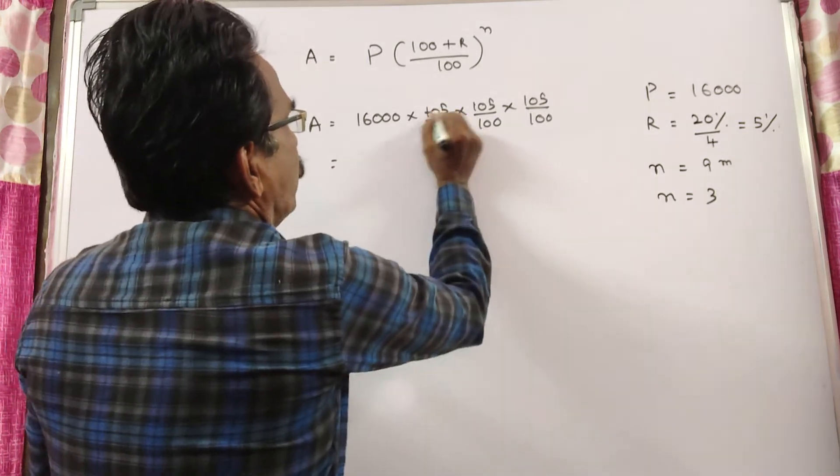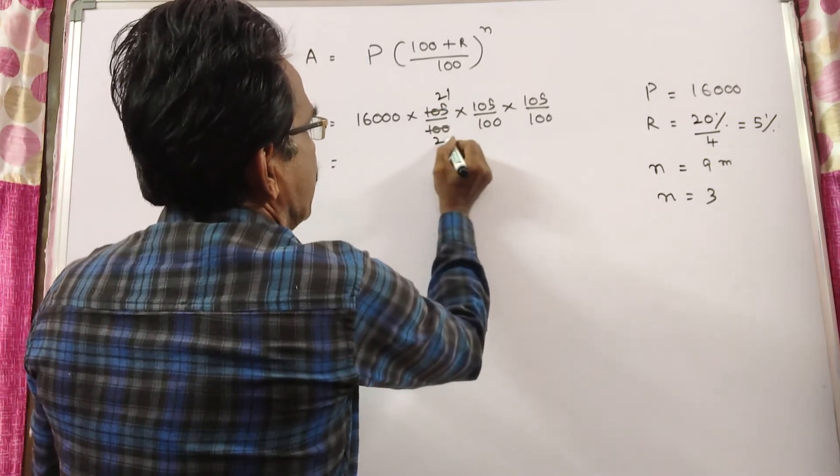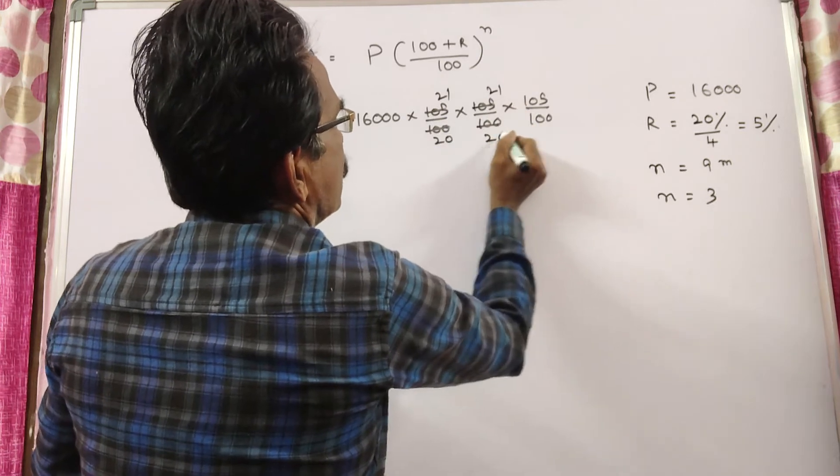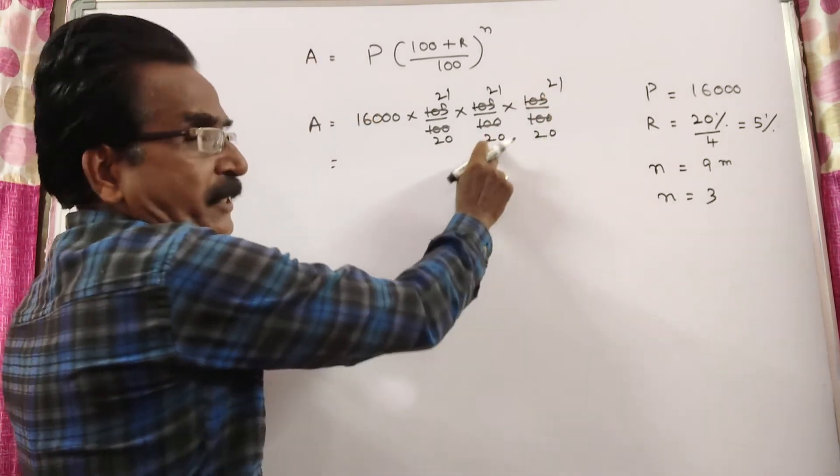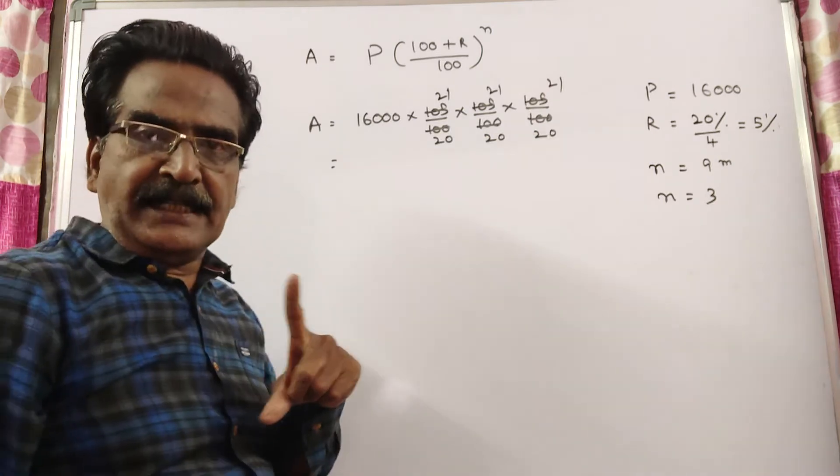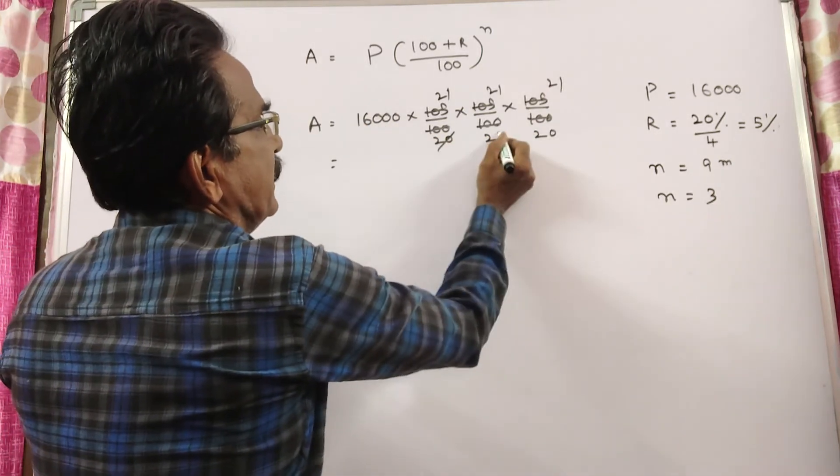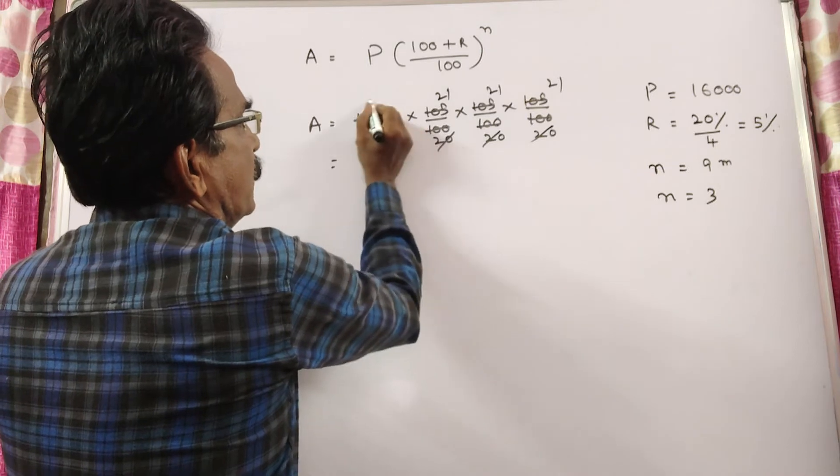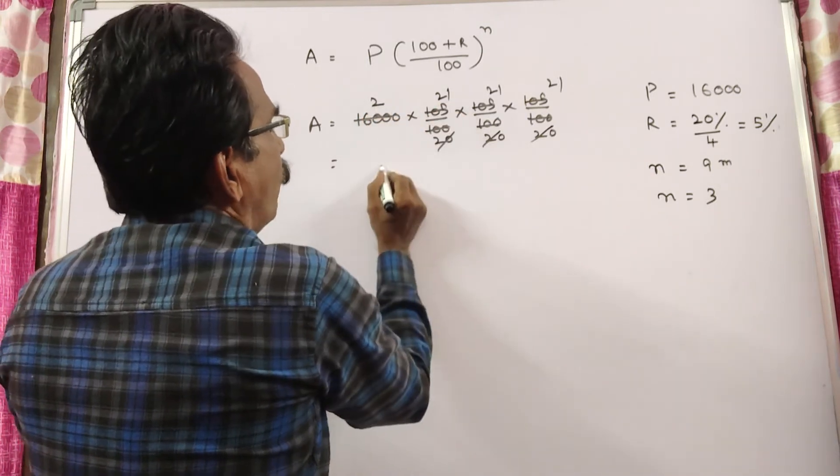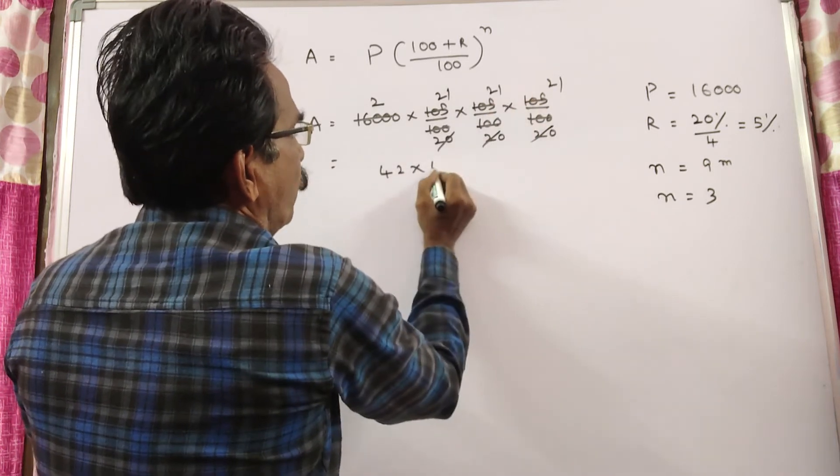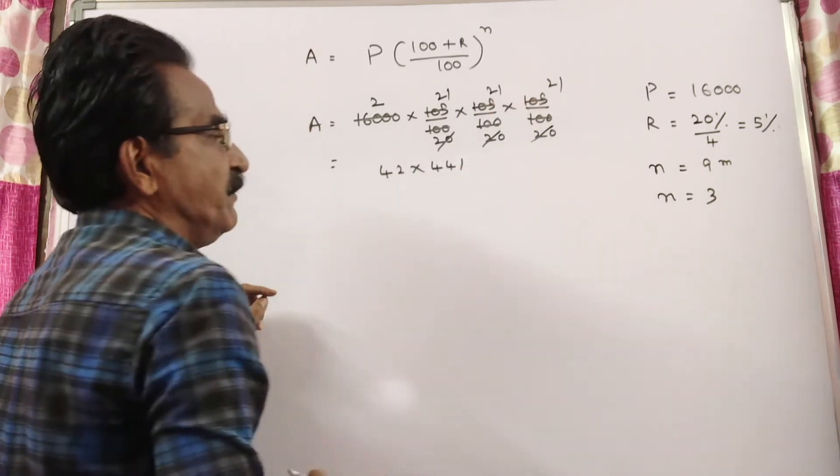So, 521's. 20 into 20 into 20, 8,000. 8,000 if you get cancelled, here you get 2. So now, 2 into 21, 42. 42 into 21 square, 441.